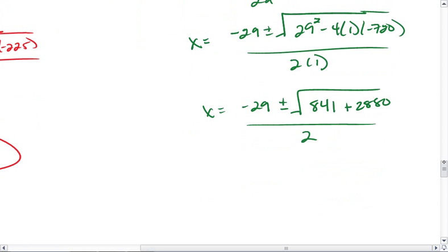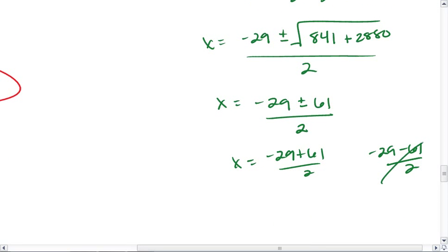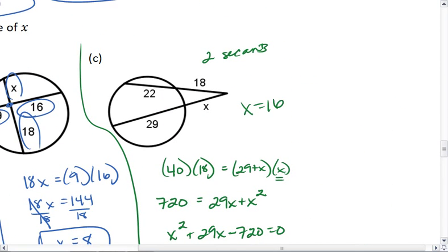All over 2, I get x equals negative 29 plus or minus, let's see, 841 plus 2880 is 3721, and we want to take the square root of that number, which makes it so I have negative 29 plus 61 over 2, and negative 29 minus 61 over 2. Again, I do not want the negative. So I get x equals 61 minus 29 all over 2, 16. And that is my final answer, x equals 16.